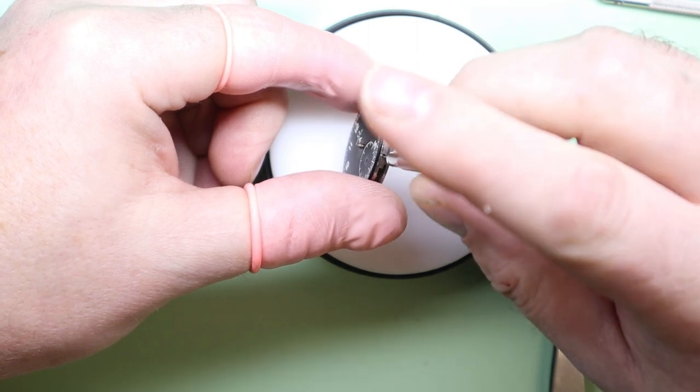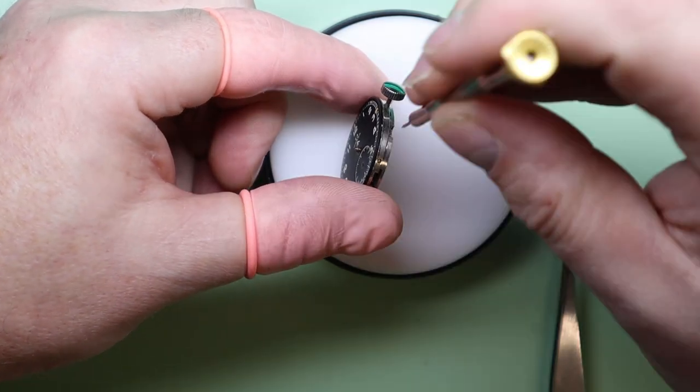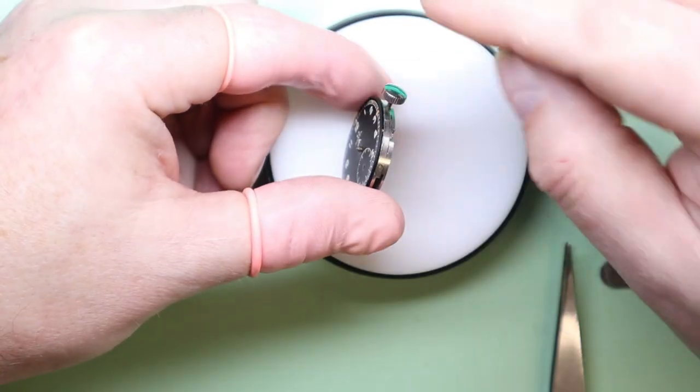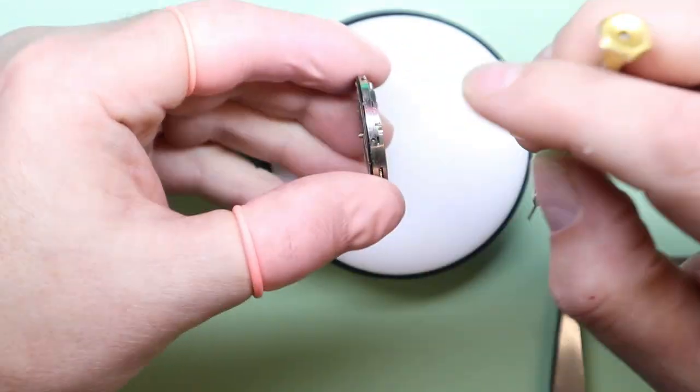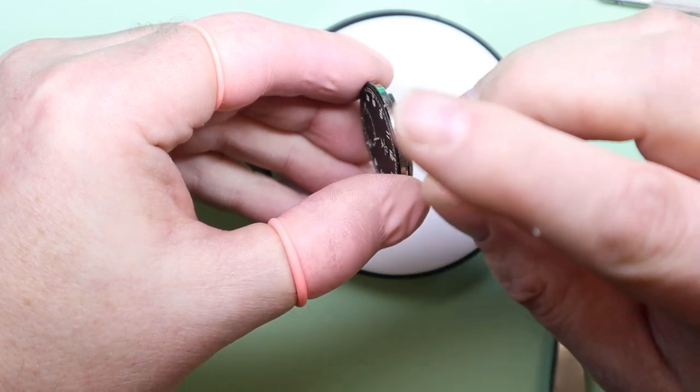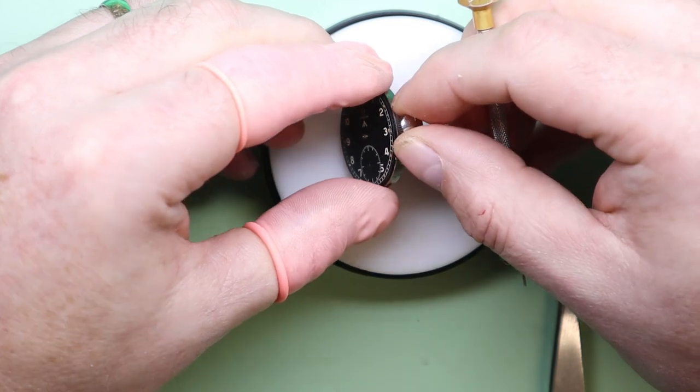This is to make sure they don't unscrew themselves whilst they're in the cleaner, because that does happen quite often with movement screws as small as this. They tend to move out of the plate and get lost somewhere in the basket. So I have a tendency to screw them back down to make sure that they don't get lost.